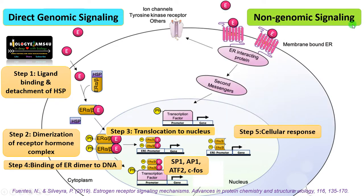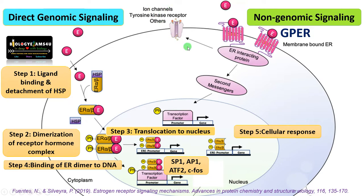The second pathway is called non-genomic signaling. There is a receptor called GPER, or G protein-coupled estrogen receptor, present on the plasma membrane. There are also many estrogen receptor alpha and beta variants found on the plasma membrane of some cells. These estrogen receptors also interact with other receptors like tyrosine kinase receptors, ion channels, and epidermal growth factor receptor.